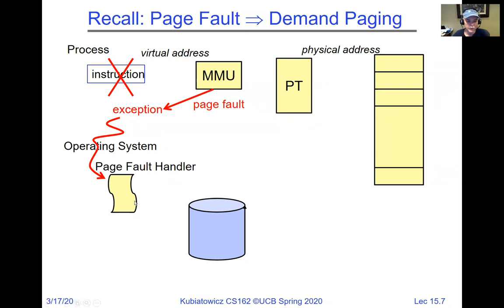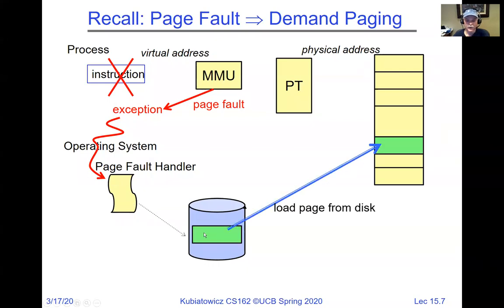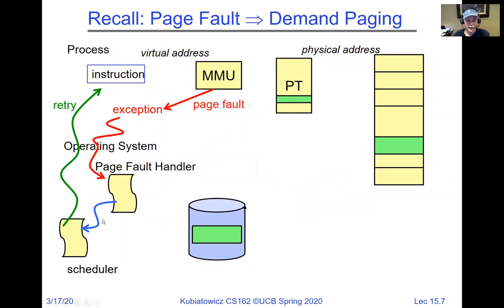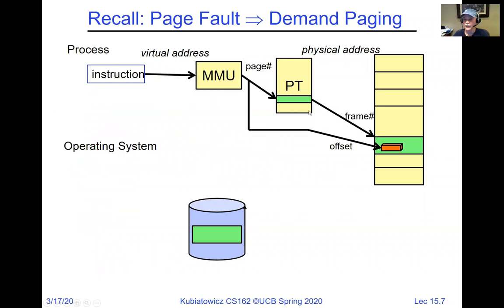The page fault handler schedules the disk to load something off disk. After roughly a million instructions worth of time, the data comes off disk into physical DRAM. The page fault handler then puts a valid entry into the page table and puts the process back on the scheduler. The instruction gets retried, the page table entry is now valid, and we go forward. This is an example of a page fault leading to pulling data off disk, putting it in memory, cleaning up the page table, and completing the access — demand paging.